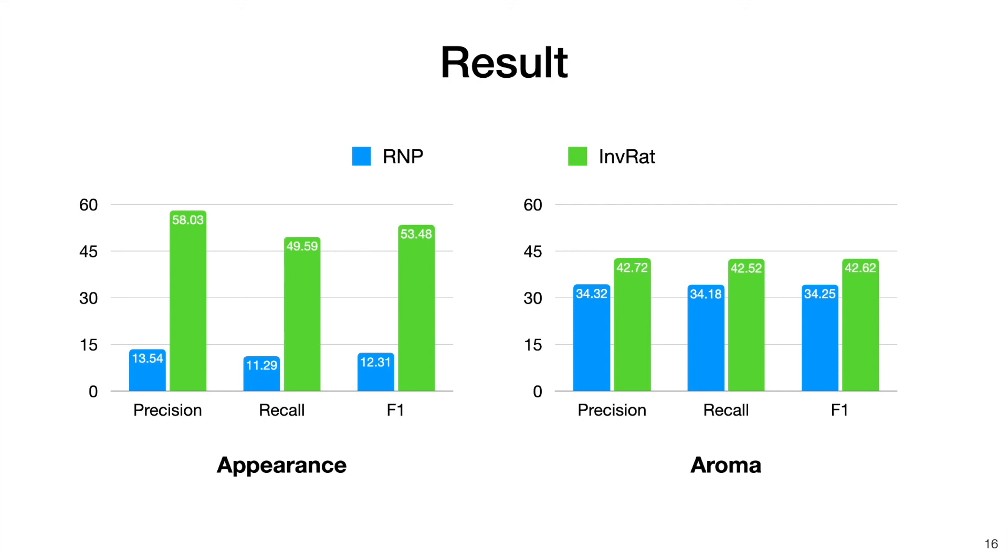The baseline, RNP, is the MMI-based algorithm that we already introduced. As can be seen, our algorithm can select rationales that are better aligned with human explanations.